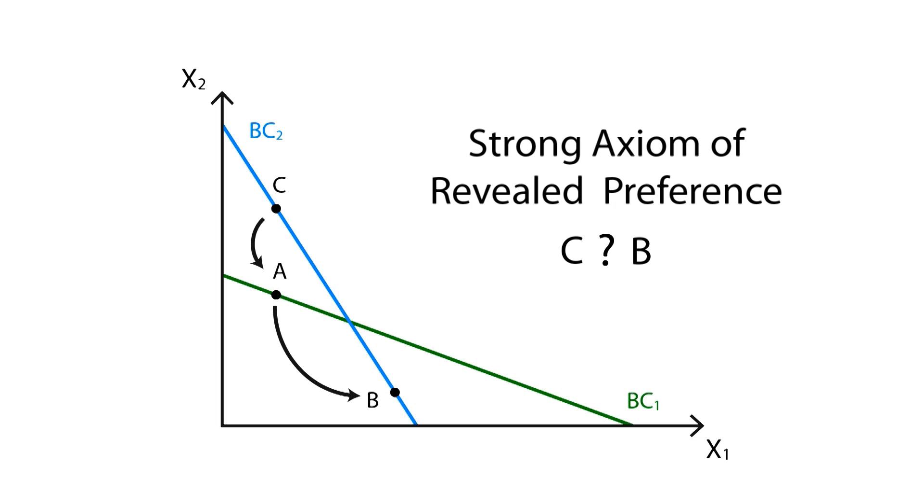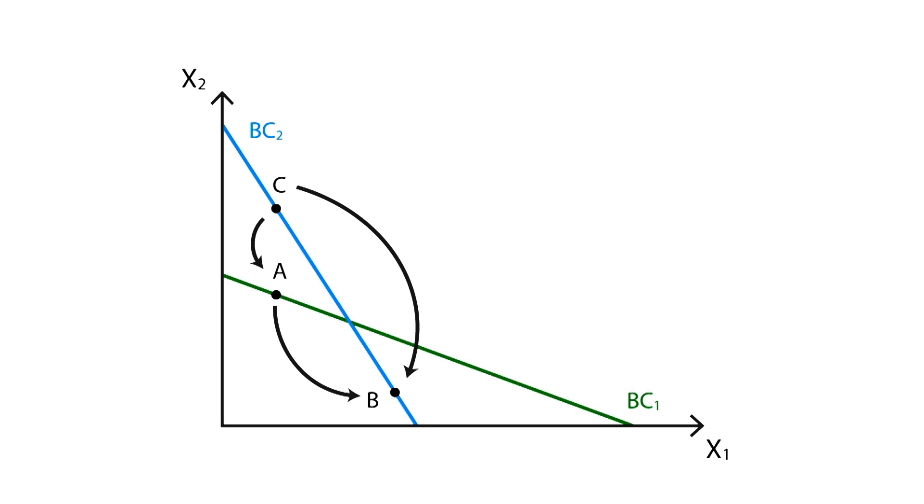transitivity dictates that C is also preferred to B. We say that C is indirectly revealed to be preferable to B. In theory, we can track this backwards to actually build utility functions if we have access to unlimited data.